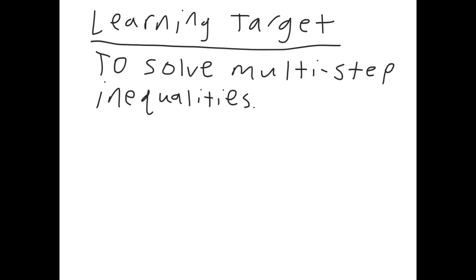Alright, so the learning target for today is to solve multi-step inequalities. They're just like solving multi-step equations, except you have to remember: if x is on the right side, you have to switch it to the left and switch the inequality sign. Also remember, if you multiply or divide both sides by a negative number, you need to switch the sign. And of course, graphing it at the end — those are the three things that are different from solving a multi-step equation; the rest are the same.